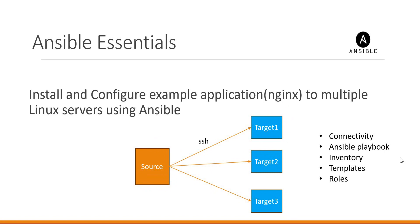To perform this, we have to complete several operations. First, we have to set up SSH passwordless connectivity from the source machine to all the target machines. Then we have to write an Ansible playbook which contains the required tasks. We also need to prepare an Ansible inventory, prepare templates for input configuration files, and finally make an Ansible role which groups commonly used tasks so roles can be used in multiple playbooks.